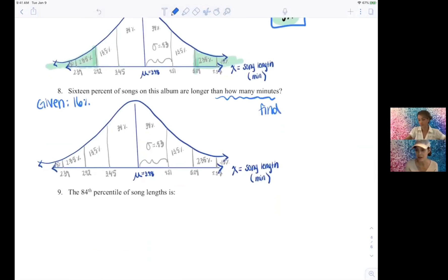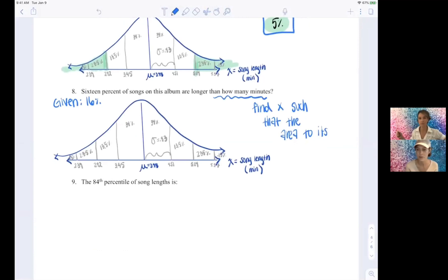Our we want that boundary on the horizontal, right. So find x such that the area to it's, what, right or left? To the right.